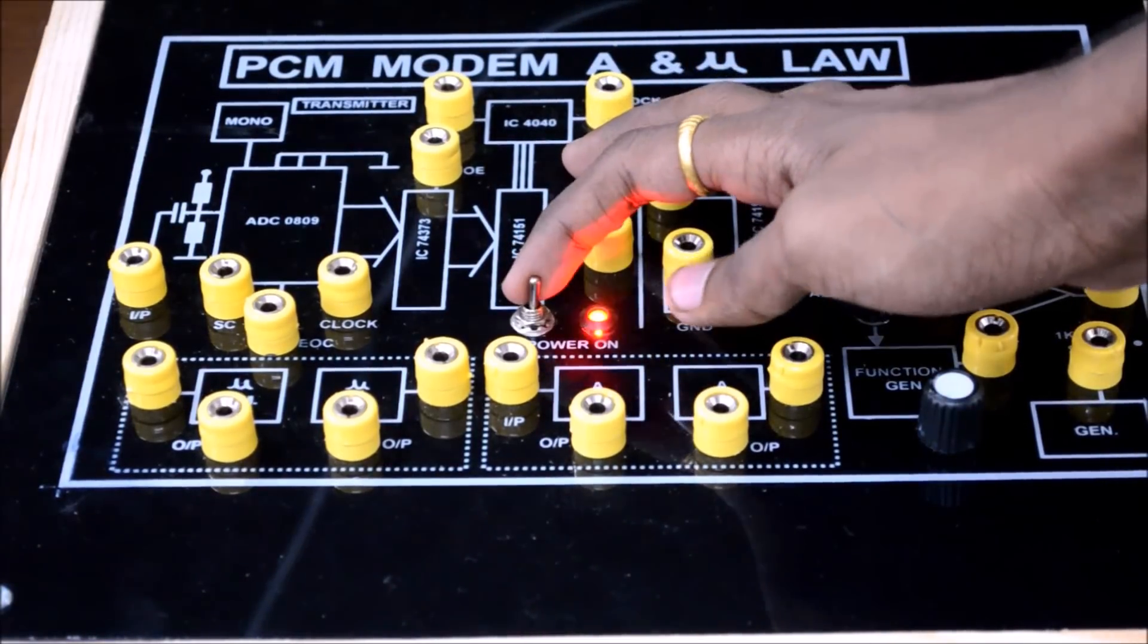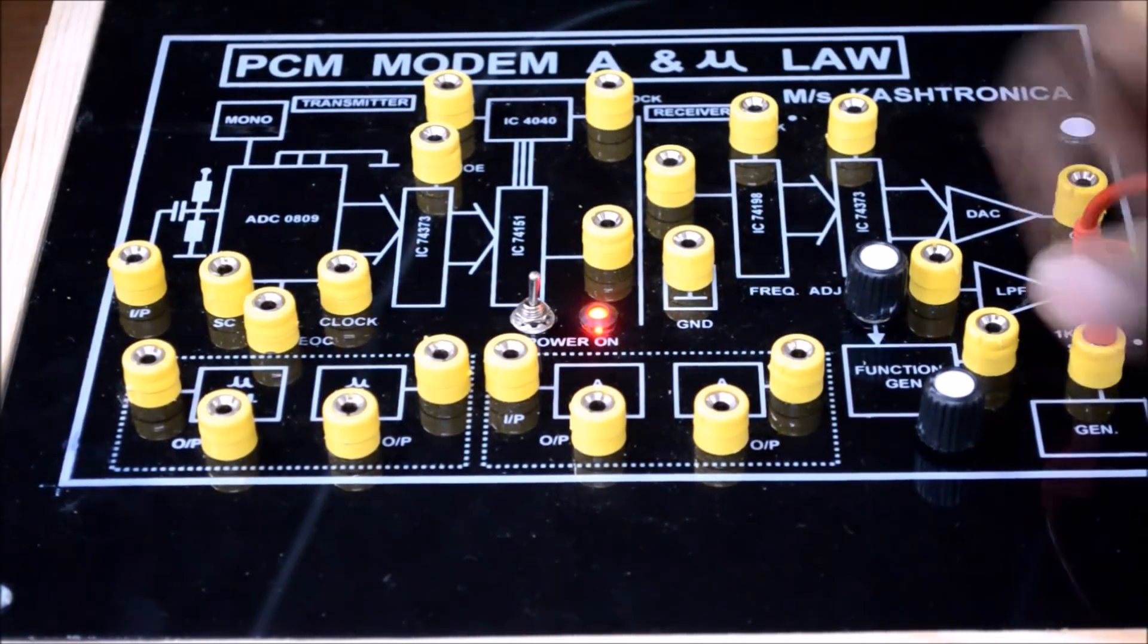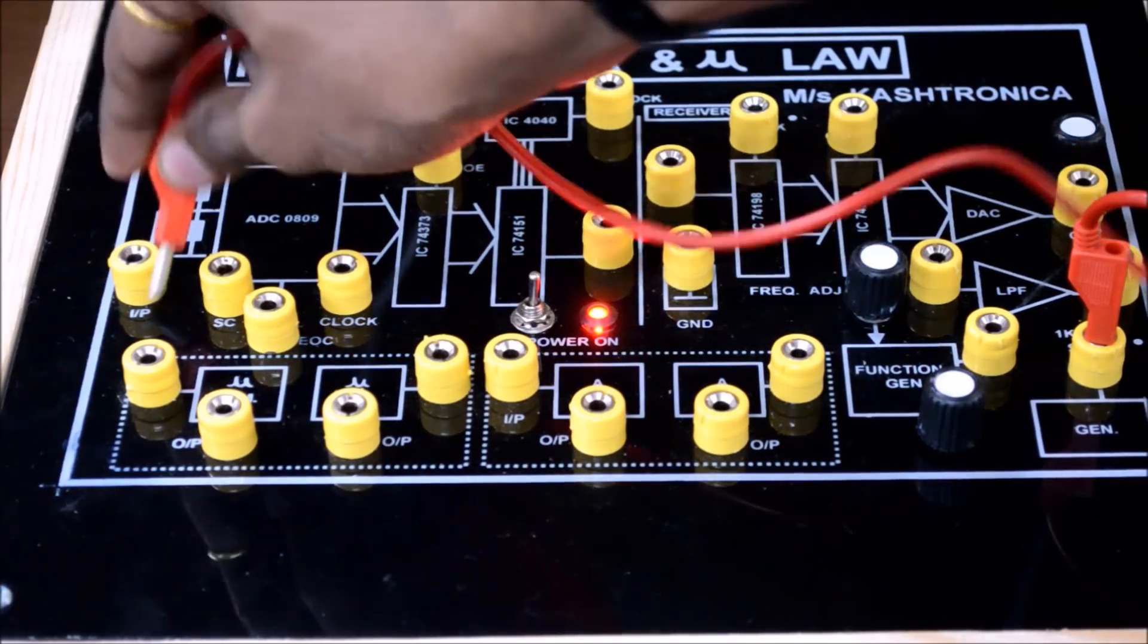First, switch on the power supply, then connect the output of the generator block to the input of the ADC block.